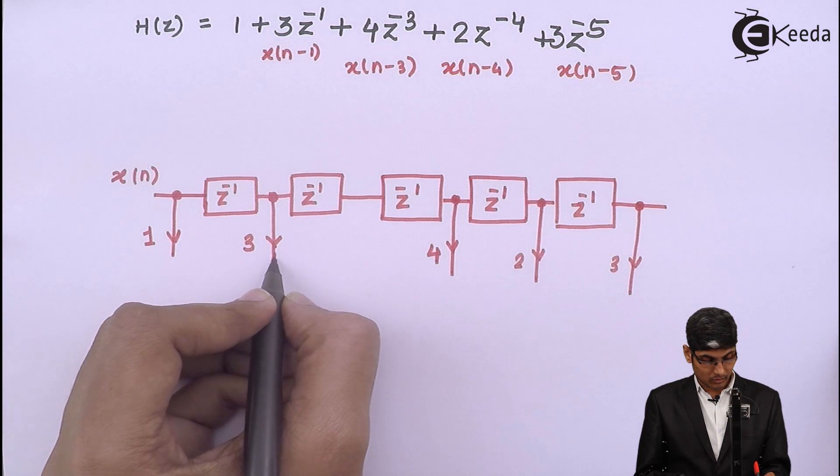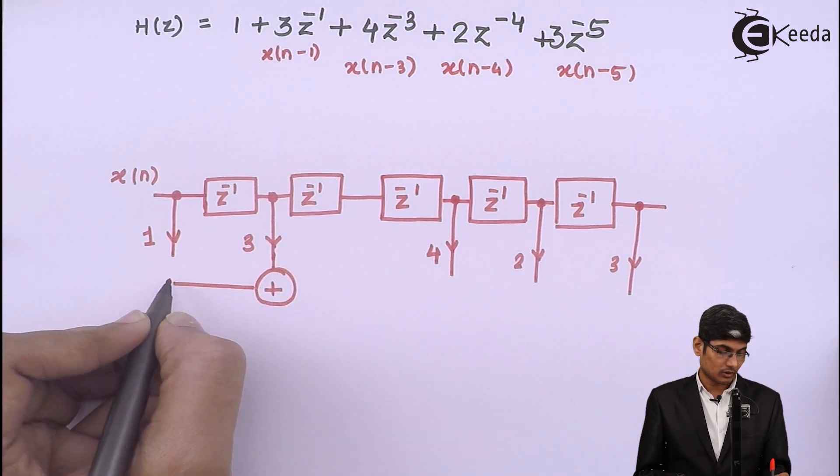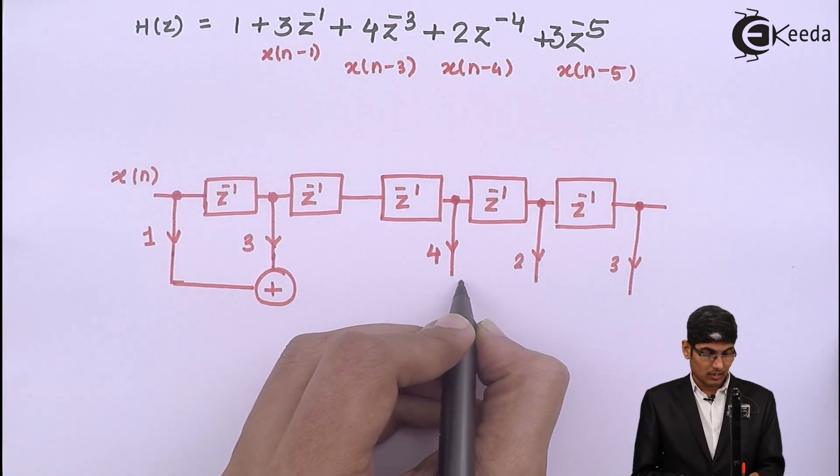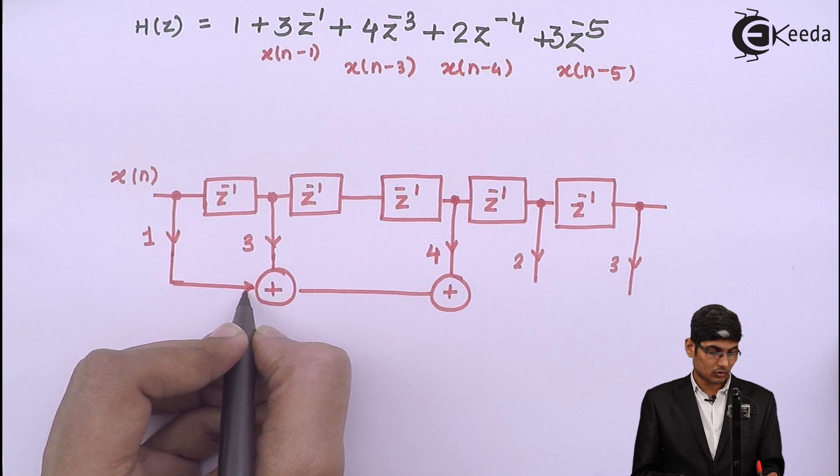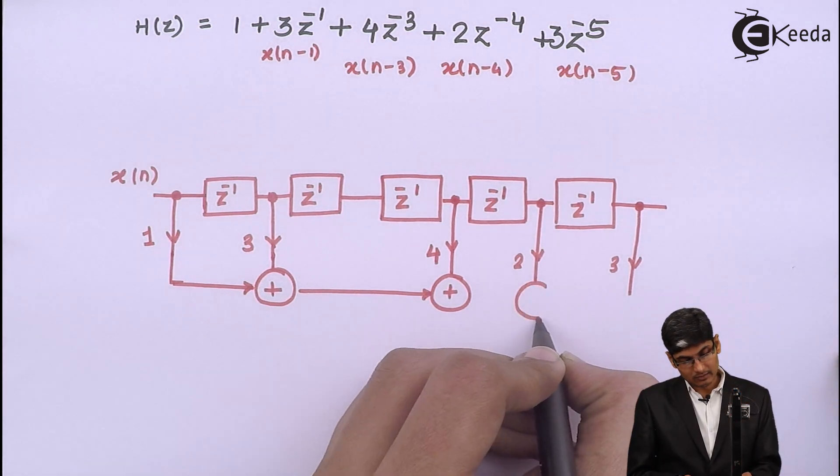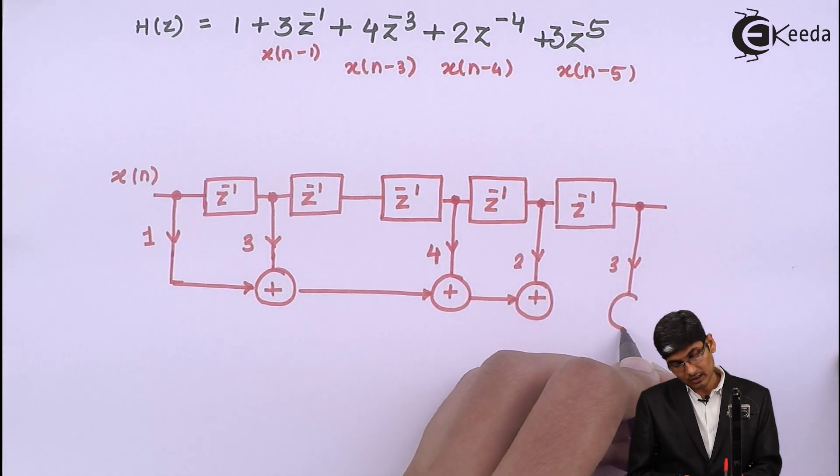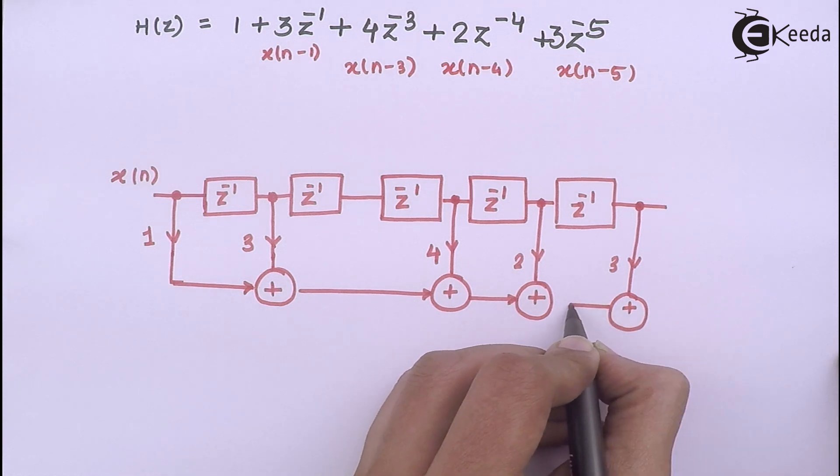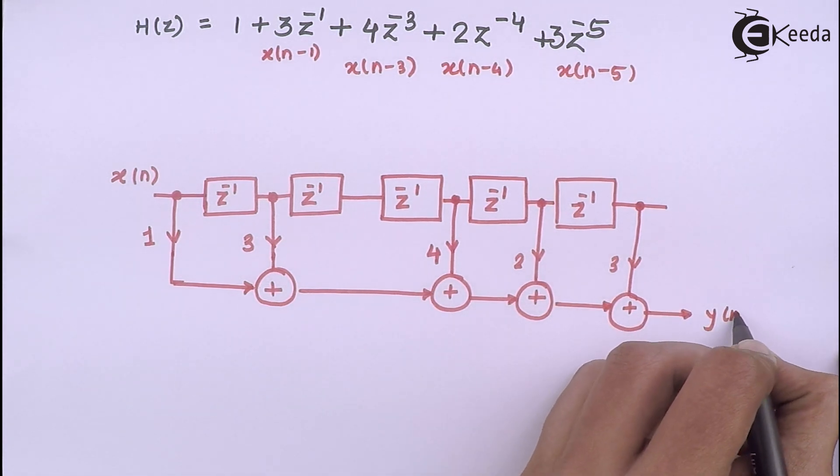Okay, let us add them all. So I make an adder and add these two guys. Then I make another adder over here and I add these two guys to the 4. Then I make another adder and I add them. And finally, when I make an adder, I will get the resultant as y(n).